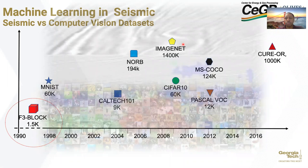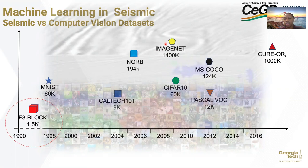There are several motivations for self-supervised learning in seismic interpretation. One of these is the scarcity of publicly annotated seismic datasets. In comparison, computer vision-based applications enjoy a huge number of labeled datasets. For instance, ImageNet has about 1.4 million publicly labeled images. The F3 block, a popular seismic dataset, has only 1,500 labeled sections publicly annotated. This disparity is a motivation for self-supervised learning in seismic.